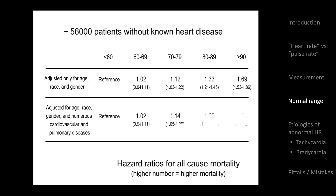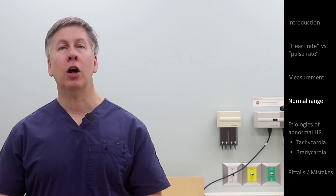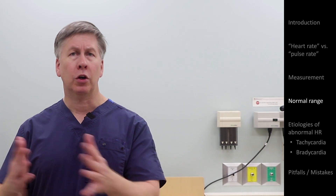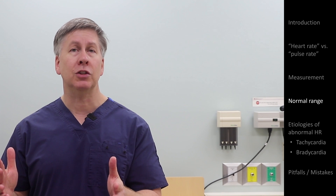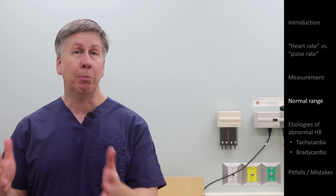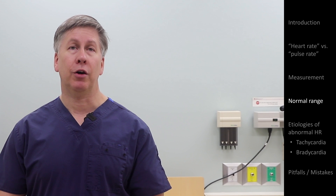And this trend persisted even after statistical adjustments were made to account for the presence of high blood pressure, high cholesterol, diabetes, smoking, obesity, and lung disease. So even if one believed that resting heart rates within the range of 90 to 100 are statistically within two standard deviations of average — which they probably aren't — they don't seem to be markers of good health.